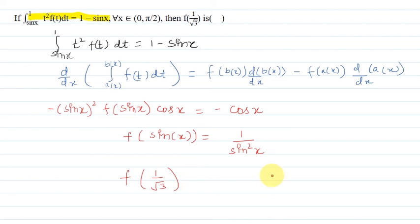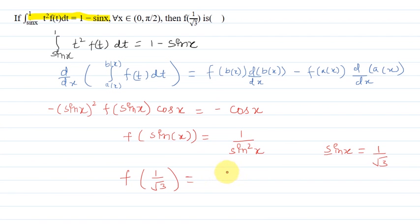To calculate this, we set sin x equal to 1/√3. So sin x equals 1/√3. We substitute this value on the right-hand side, and 1 divided by sin x becomes 1 divided by (1/√3), which equals 1 divided by (1/3).